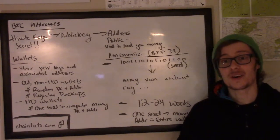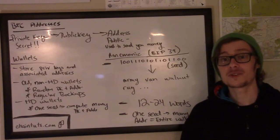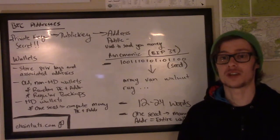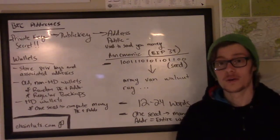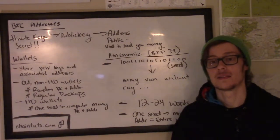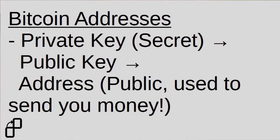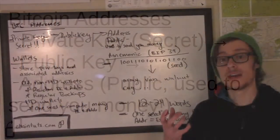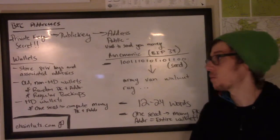Now as we get started talking about BIP39, we first need to talk a little bit about how Bitcoin addresses are generated. Every Bitcoin address starts with something called a private key that's generated. This is a secret — you would never want to share it with anyone, and it's used to sign and prove that you own some amount of Bitcoin or another cryptocurrency when you initiate a transaction on the network.